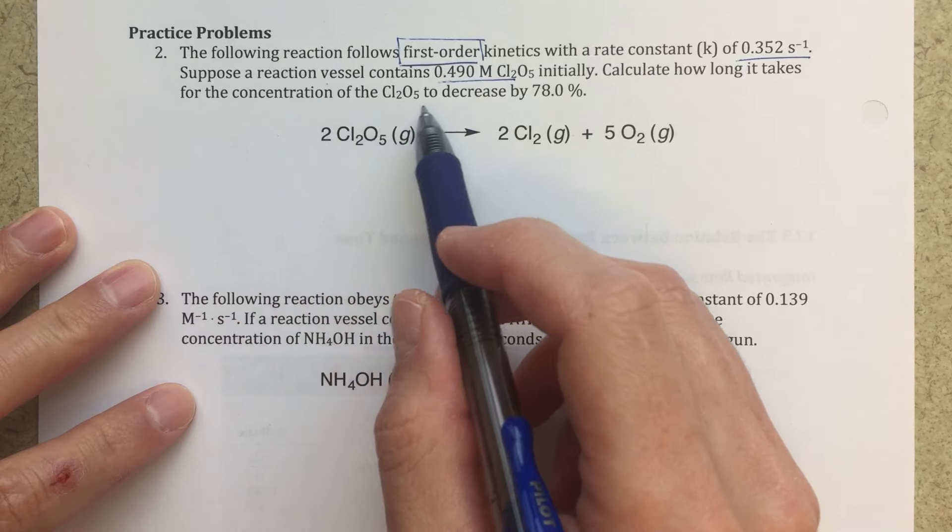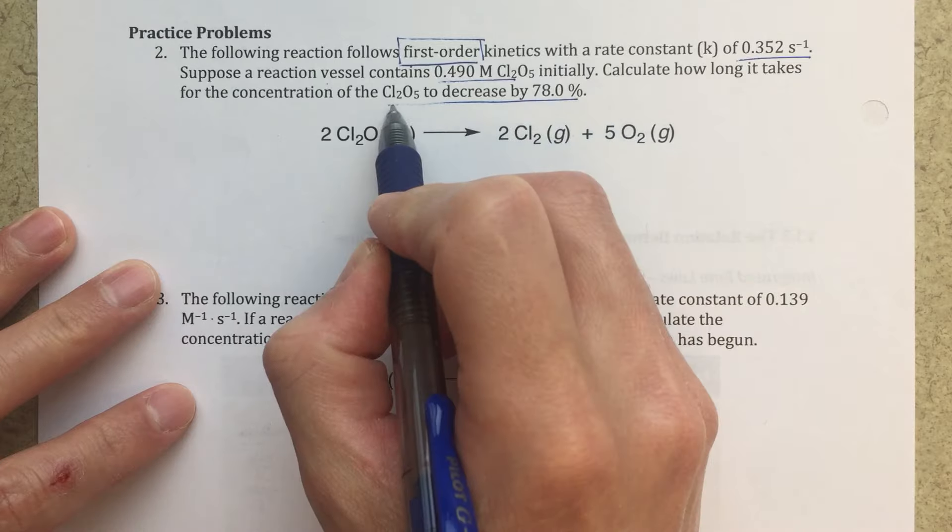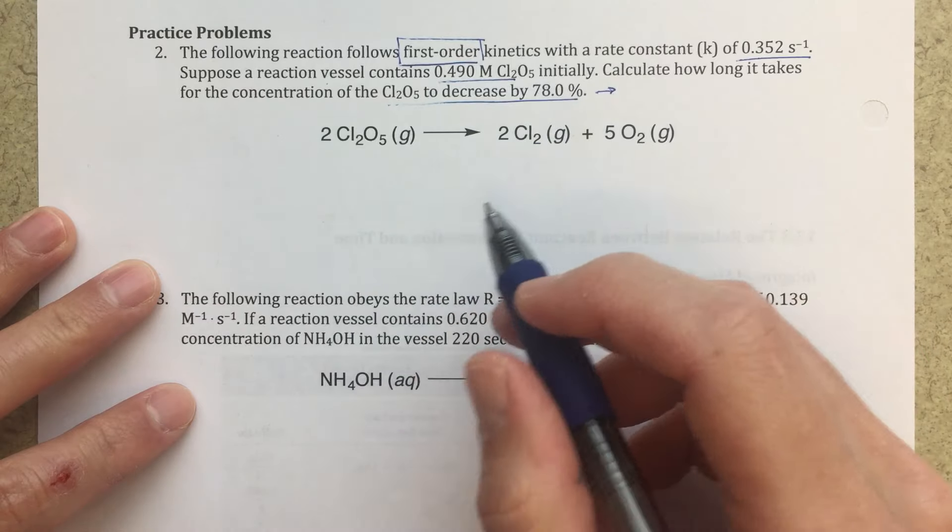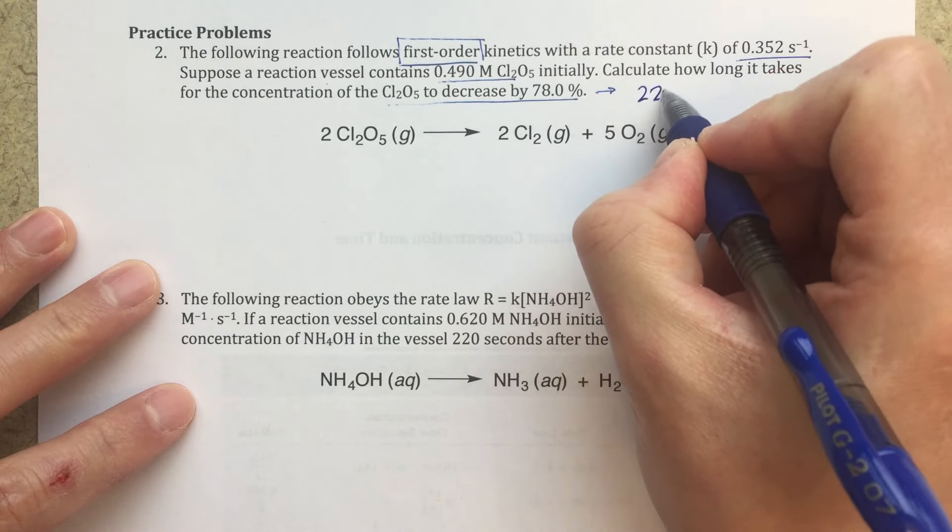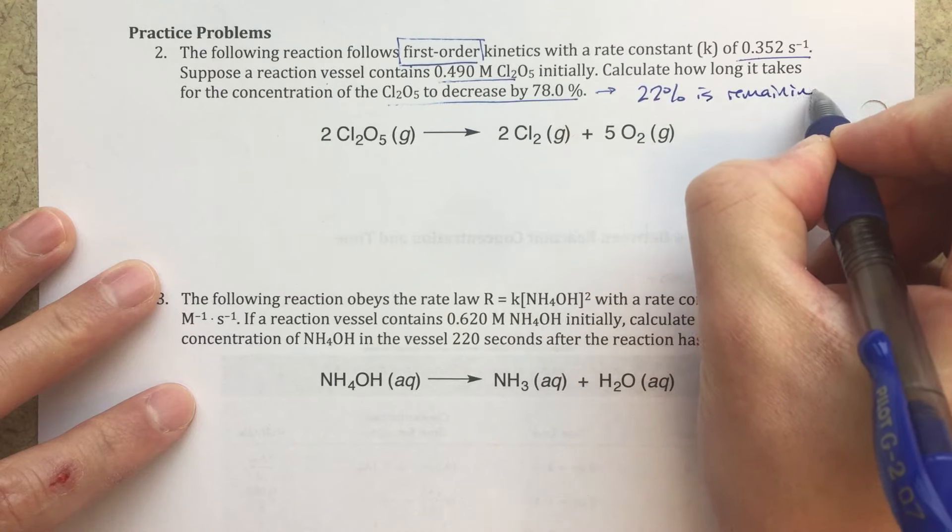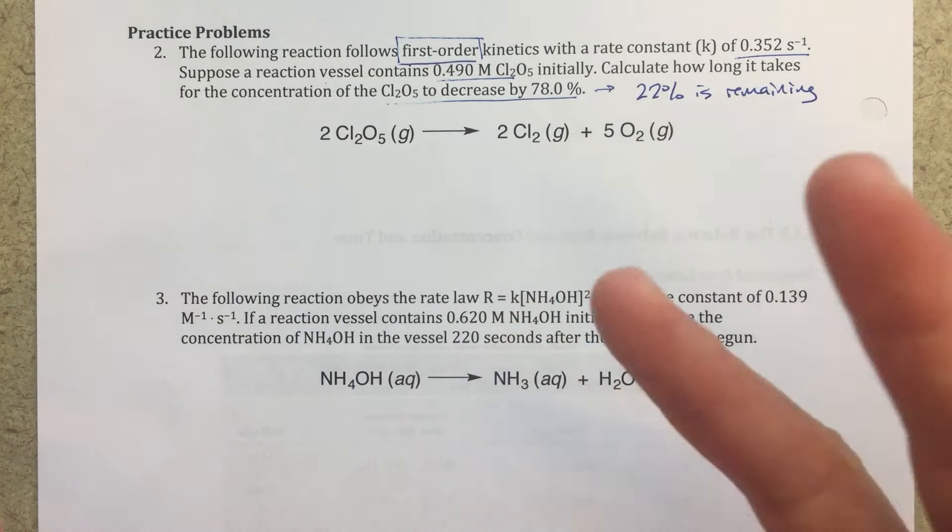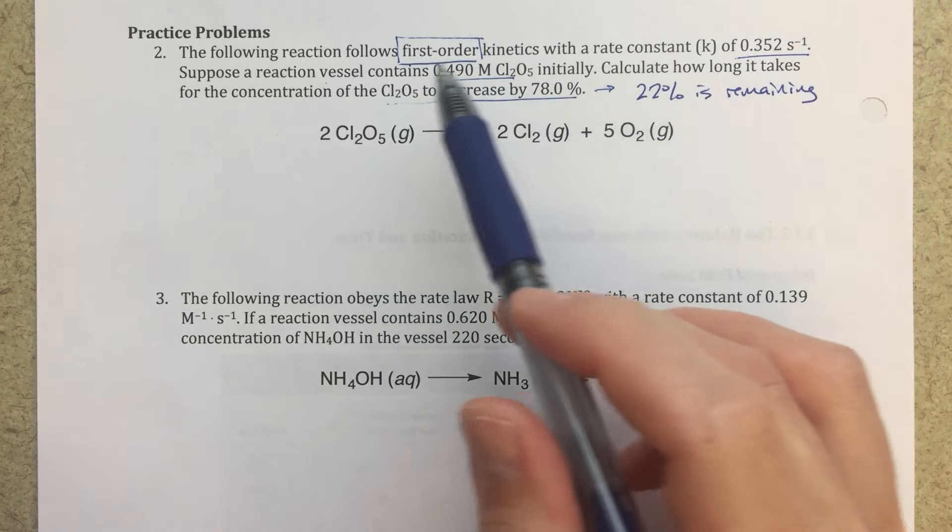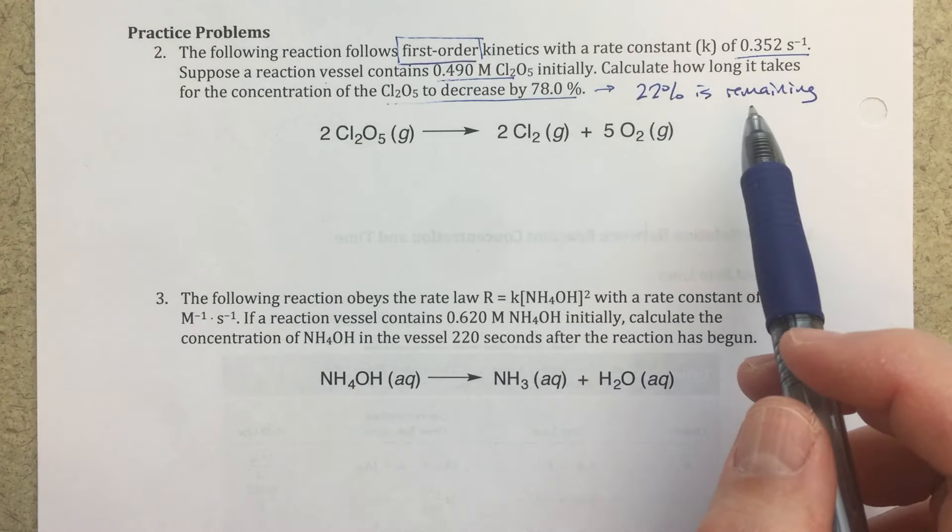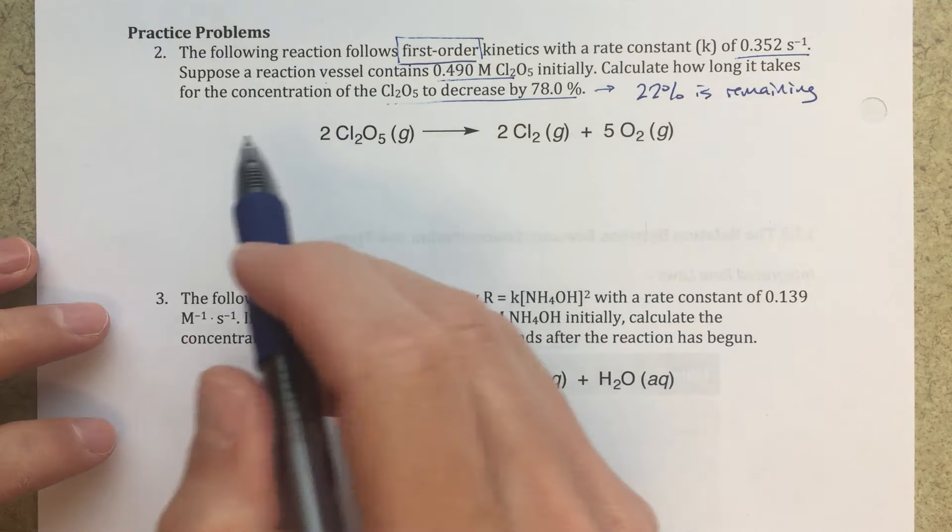Calculate how long it takes for the concentration to decrease by 78%. So what we need to do is take this information and figure out what exactly that means. To decrease by 78% would mean that 22% is remaining. So sometimes you might be looking at this and you might not know how to get started or what it really means. But we do need to practice taking these words and saying, well, what does that really mean? So what that means is that 22% would be remaining of my initial 0.490 molar. So over here, I'm going to organize my information.